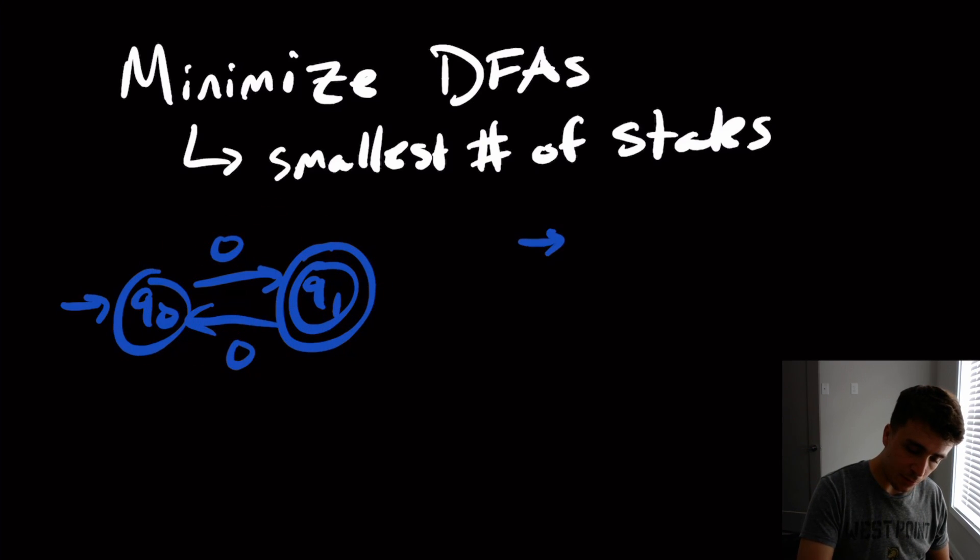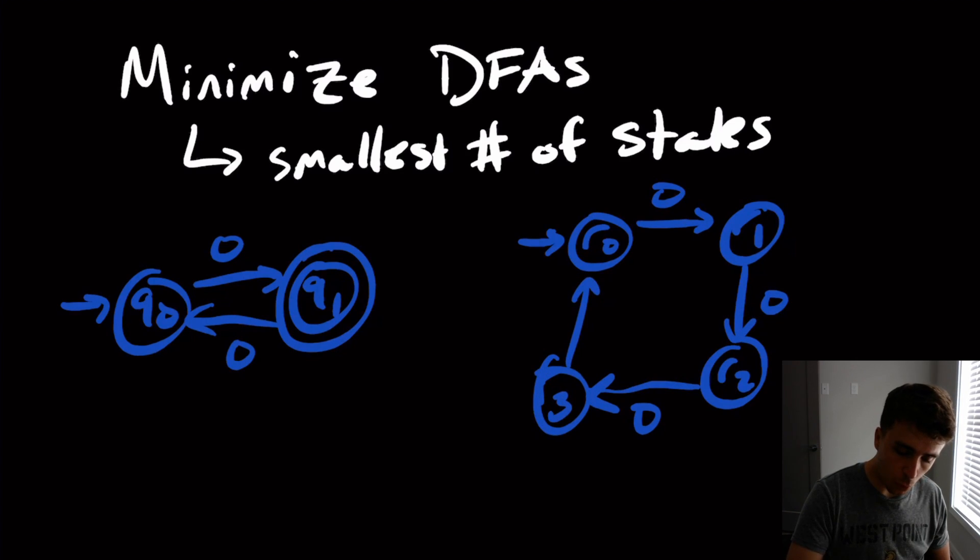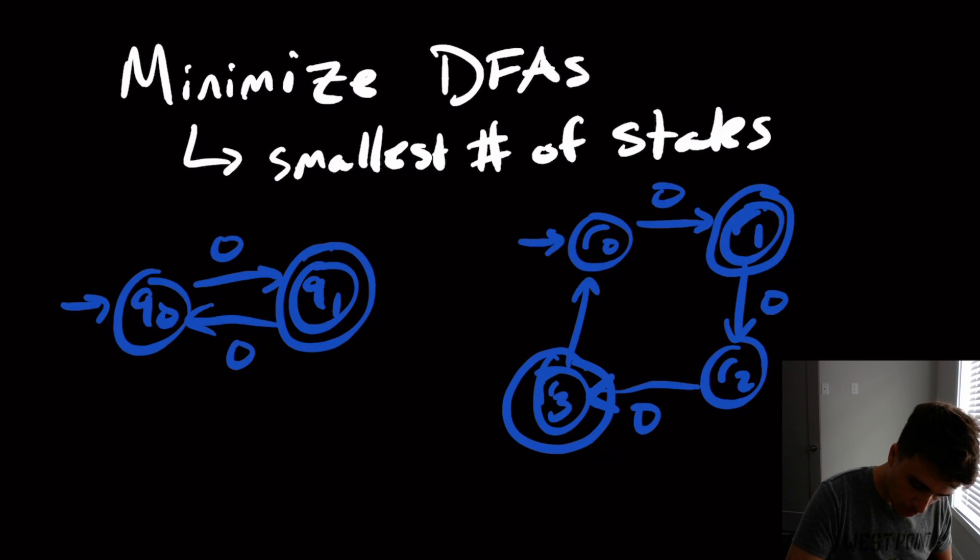But if I have this DFA, for example—oops, did that wrong. So then let's just say we have this particular DFA, which is bigger. So it has four states. And now I'm going to make final these two, maybe I should put an R there.